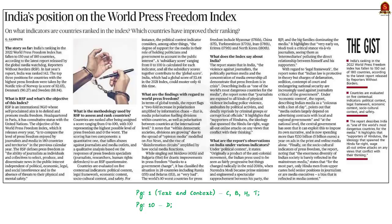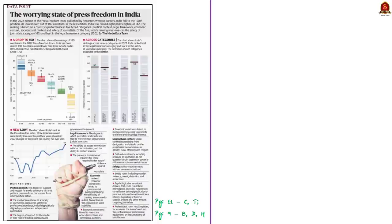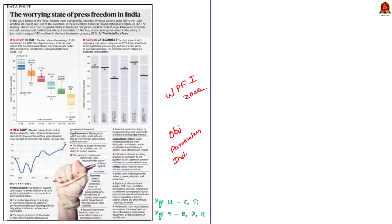Our first article discussion is based on the recent World Press Freedom Index of 2022. These kinds of indices are quite important from the UPSC perspective. From the prelims angle, it is important to know their objectives and the parameters on which the index ranks countries, as well as India's position. From the mains perspective, it is important to know the reason for India's ranking.